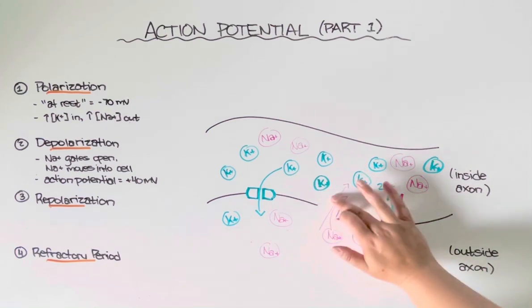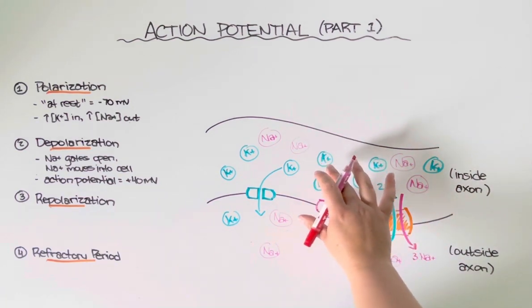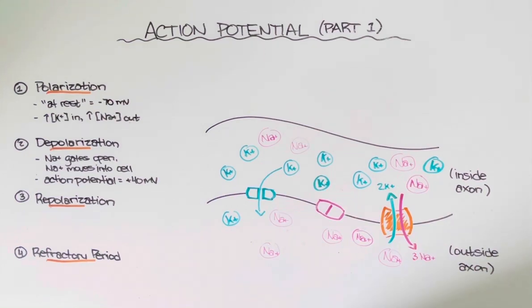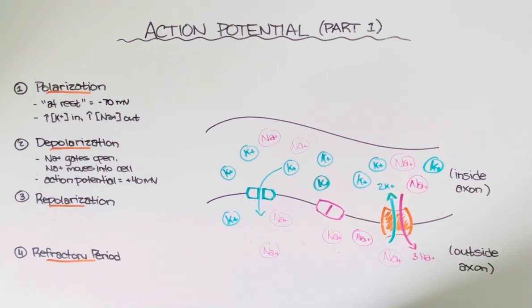When that happens then our sodium gates are going to close. There's no reason for them to stay open because sodium can't keep moving against its gradient. And at this point that signal then is going to start moving down the rest of the axon. And the new goal is to try and restore the original concentration gradients in this part of the axon so that it can respond once again if another impulse is received. So the depolarization process is moving the signal along. The next two stages are basically allowing the cell to recover from that.